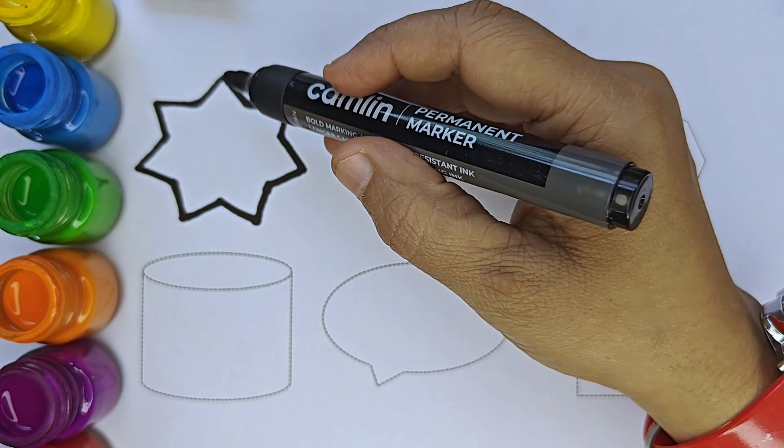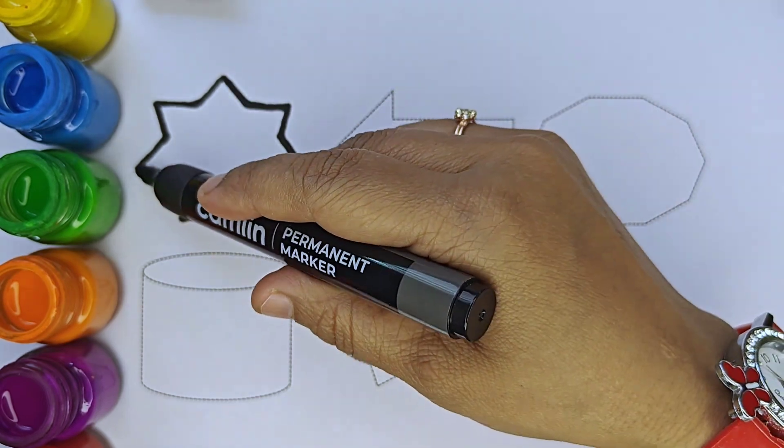This is a star, it has 7 points: 1, 2, 3, 4, 5, 6, 7.